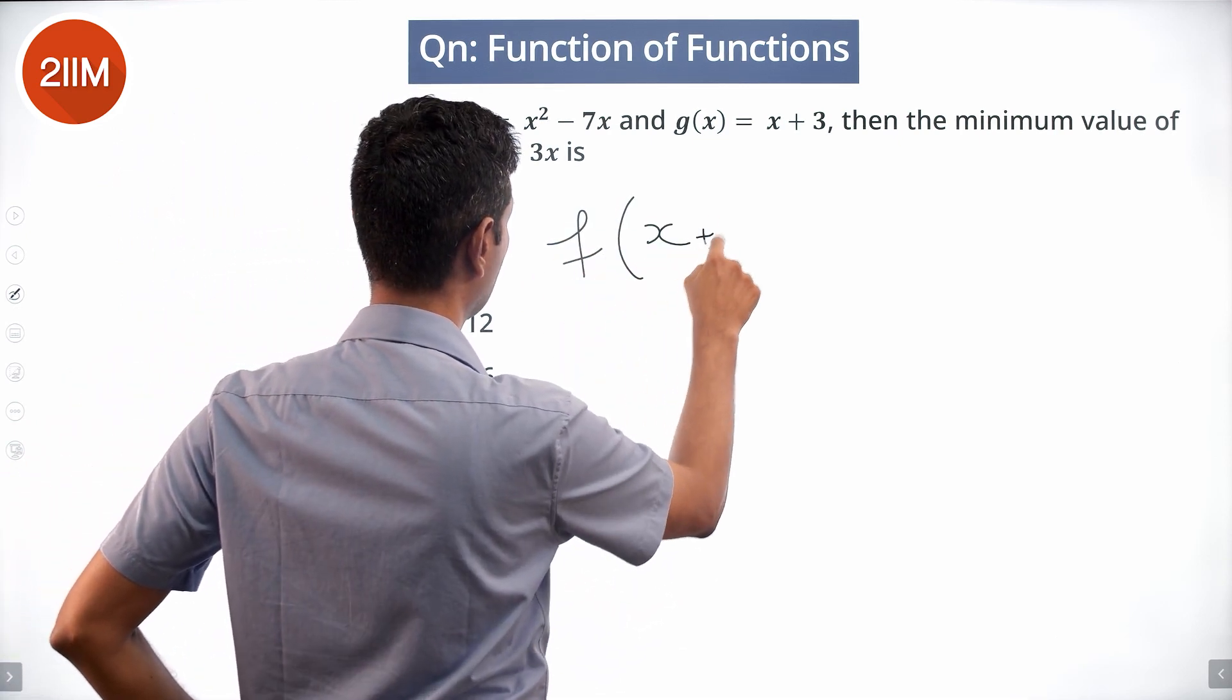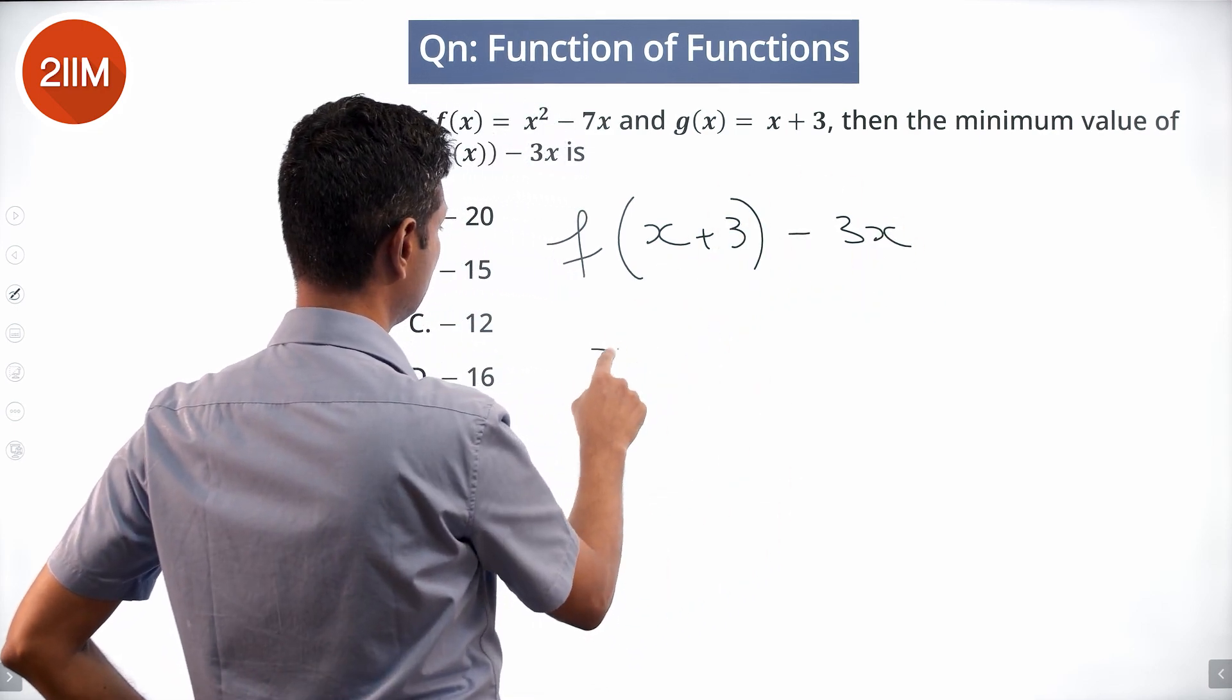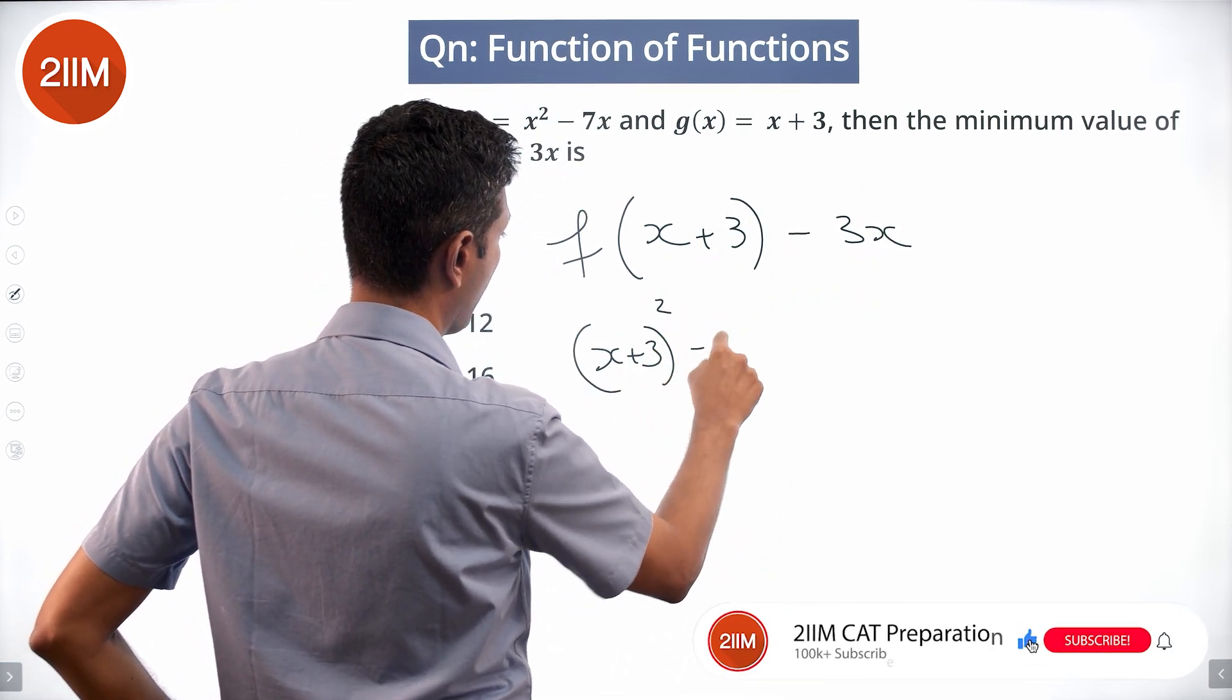f of x plus 3 minus 3x. We need to minimize this. This is x plus 3 whole squared minus